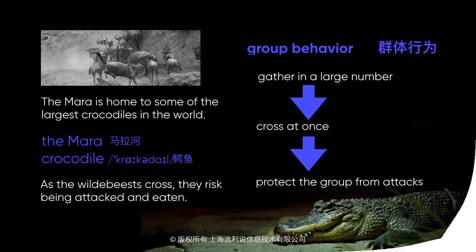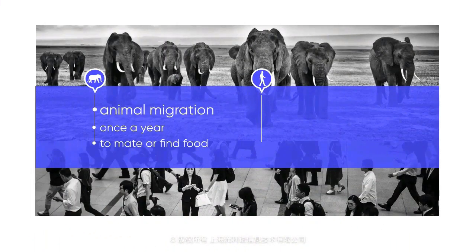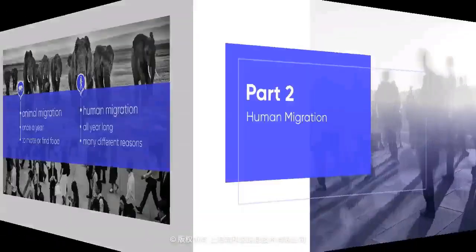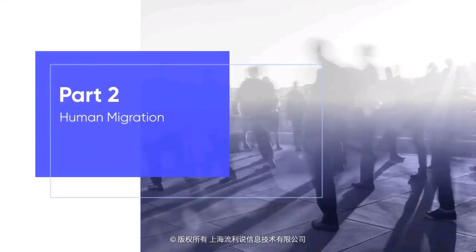As we've learned so far, most animal migrations happen once a year, either to mate or find food. Humans, though, migrate all year long and often for many different reasons. People may migrate for different reasons, but there are two main kinds of human migration: domestic and international. Today, we're going to discuss both.